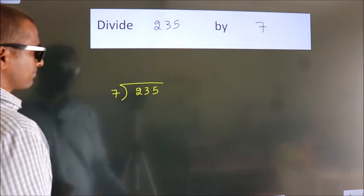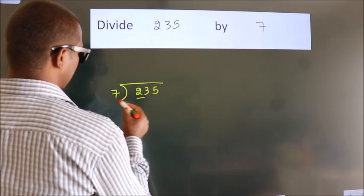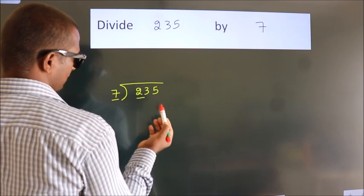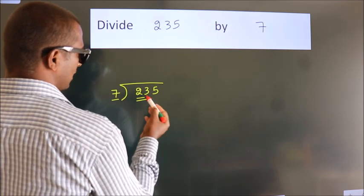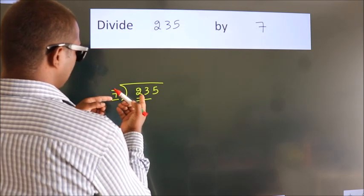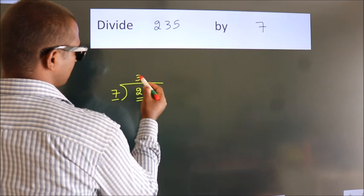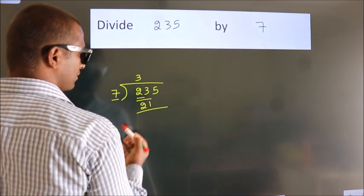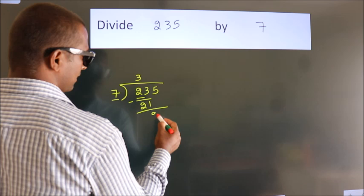Next, here we have 2, here 7. 2 smaller than 7, so we should take 2 numbers: 23. A number close to 23 in 7 table is 7 threes, 21. Now we should subtract, we get 2.